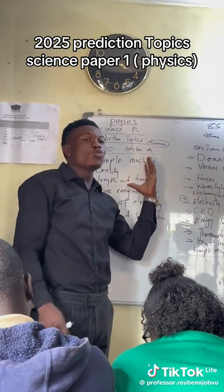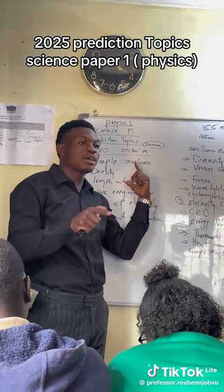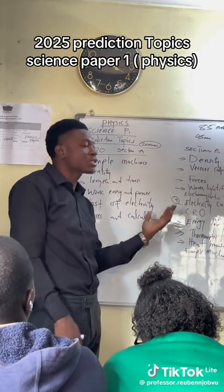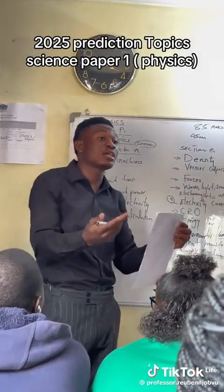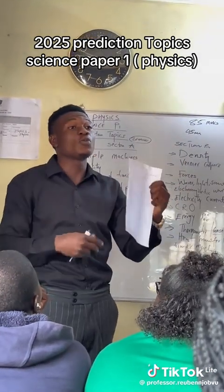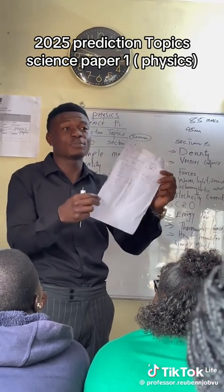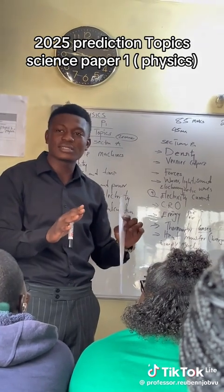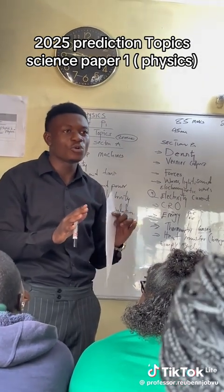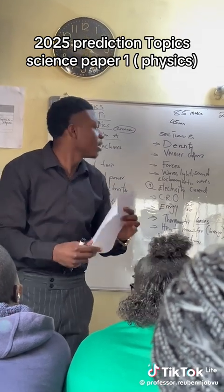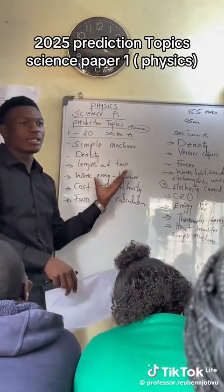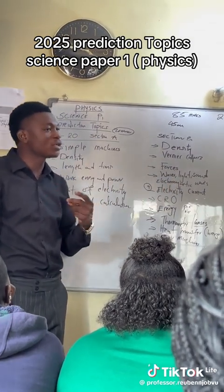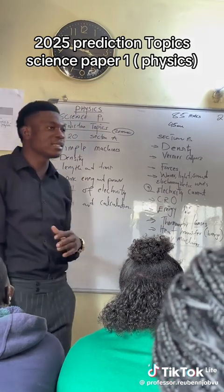Section A wastes a lot of time if you're not careful, so I advise you to first skim through the entire paper. When you open the paper, check through everything — you'll find a graph at the back. Take your time, relax. Don't start with Section A; start with Section B first and answer the questions there.